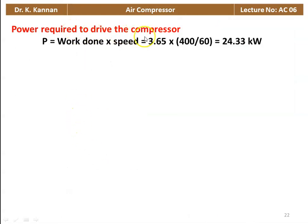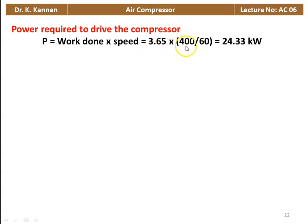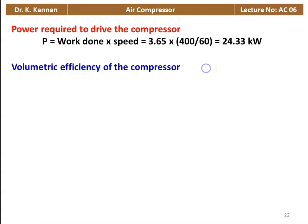The power required to drive the compressor equals work done into speed. Speed is 400 rpm, which must be converted to revolutions per second. So 3.65 into 400 divided by 60 equals 24.33 kilowatts. That is the power required to drive the compressor.